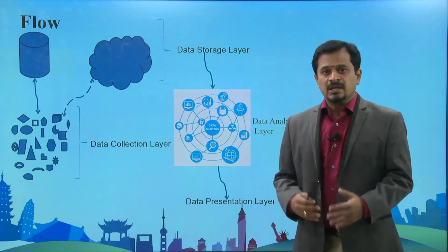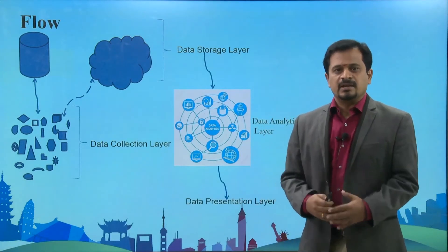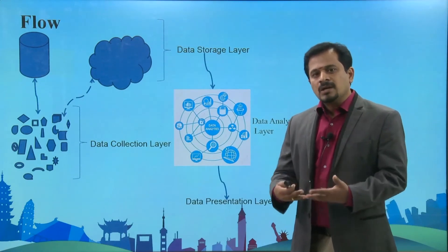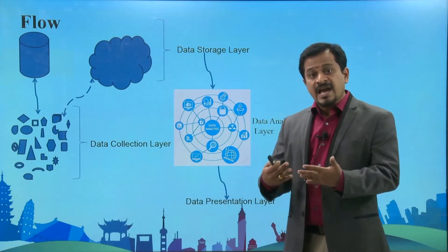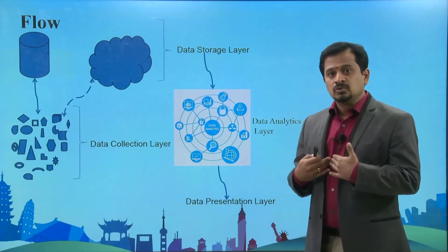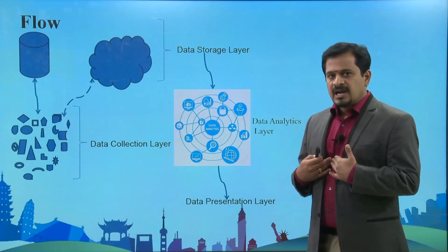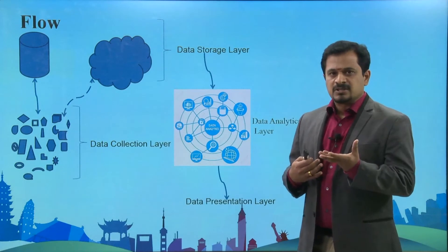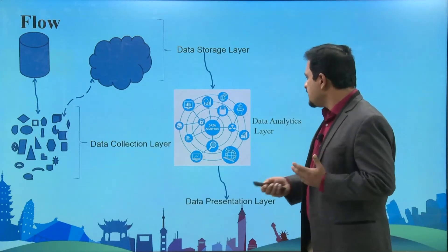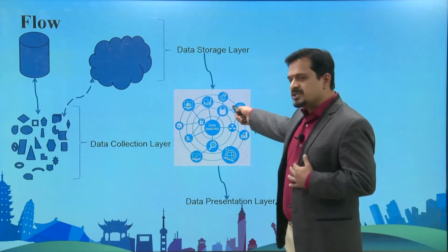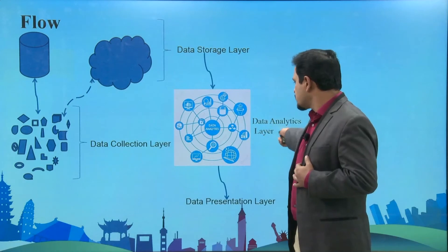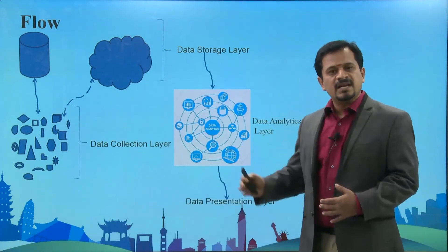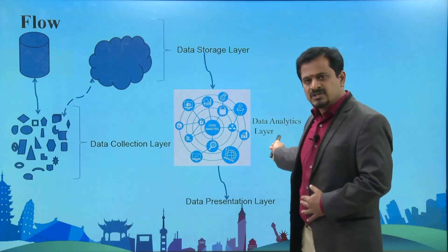These informations, we call it raw data information. By using raw data information we are going to provide a lot of intelligence to that data. What intelligent informations can we take from the raw data — that will be the major brain of this Internet of Things.